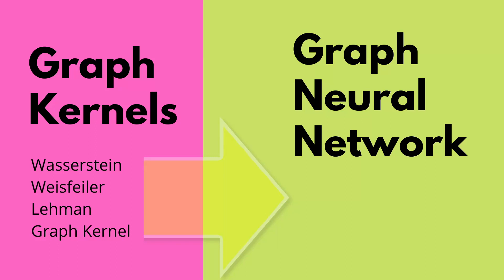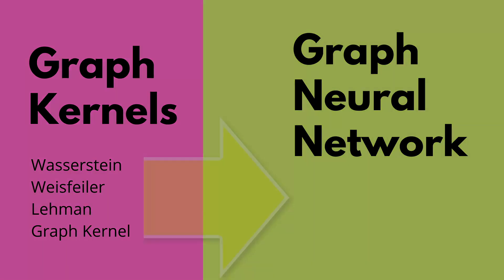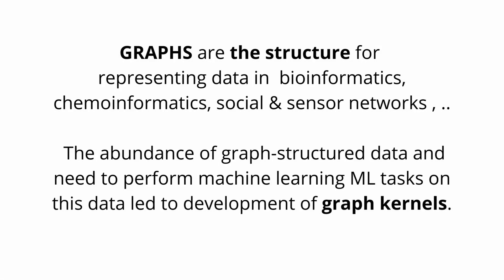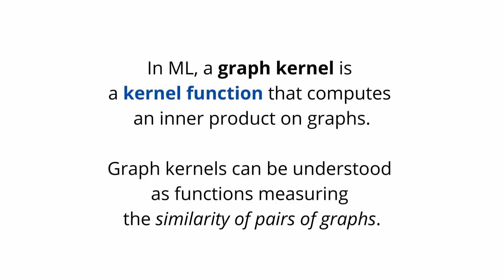Graph kernels. What are graph kernels and how are they related to graph neural networks? Graphs are the structure for representing data in bioinformatics, chemoinformatics, social networks, and sensor networks. Because of the abundance of graph-structured data, we need to perform machine learning tasks on this kind of data, which led to the development of graph kernels.